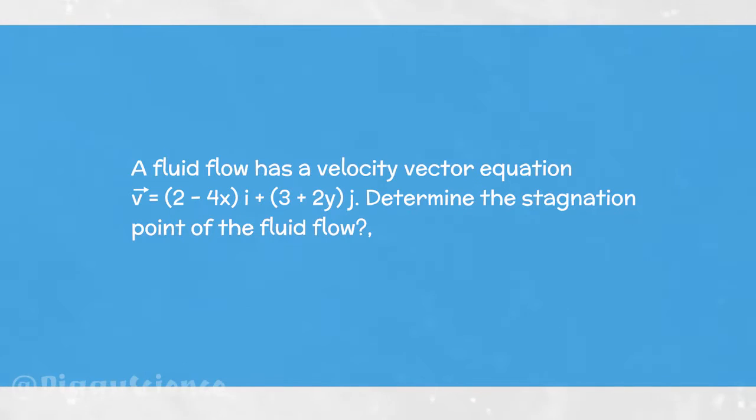A fluid flow has a velocity vector equation v equal to 2 minus 4x i hat plus 3 plus 2y j hat. The question is, determine the stagnation point of the fluid flow.